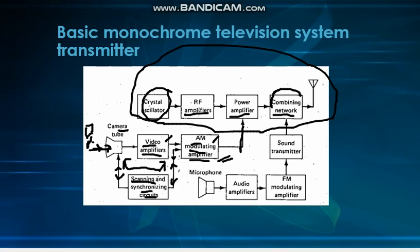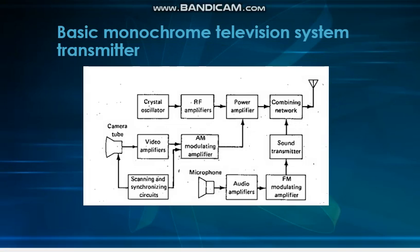There is a combining network before transmitting. The sound transmitter uses an FM modulating amplifier with a microphone. Audio grabbed by the microphone goes through to the audio amplifier, then to the FM modulation amplifier, then to the sound transmitter, and finally combines in the combining network before transmission. Please look forward and understand clearly what the monochrome television system transmitter is.